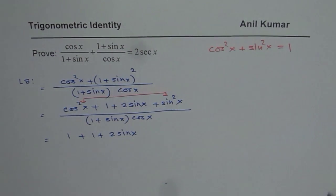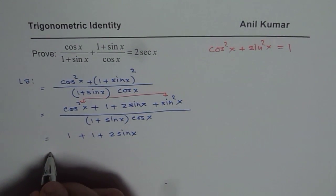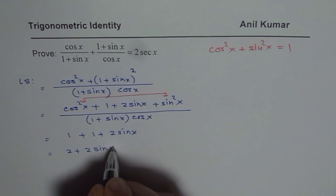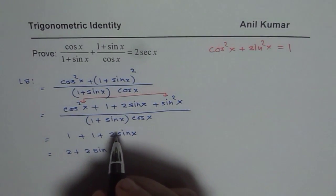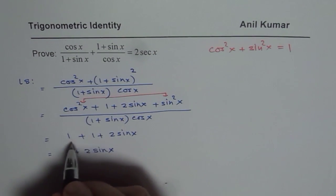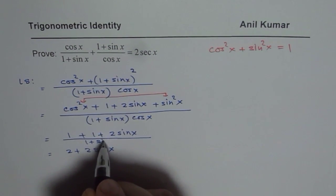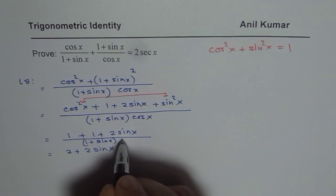Now we have 1 plus 1 is 2. So we could write this as 2 plus 2 sin x divided by 1 plus sin x times cos x.